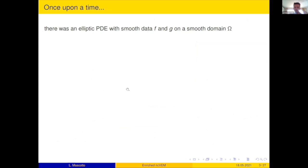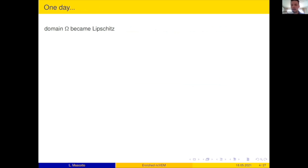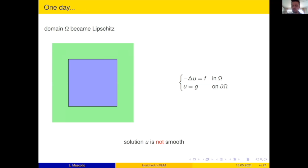So I will start with a fairy tale. Once upon a time, there was an elliptic PDE with some smooth data, some smooth boundary condition on a smooth domain. You can imagine to have, say, a Poisson problem with right hand side F smooth, boundary condition G smooth, let's say on a ball. Then I know from standard regularity of elliptic PDEs, the solution to this problem is actually smooth.